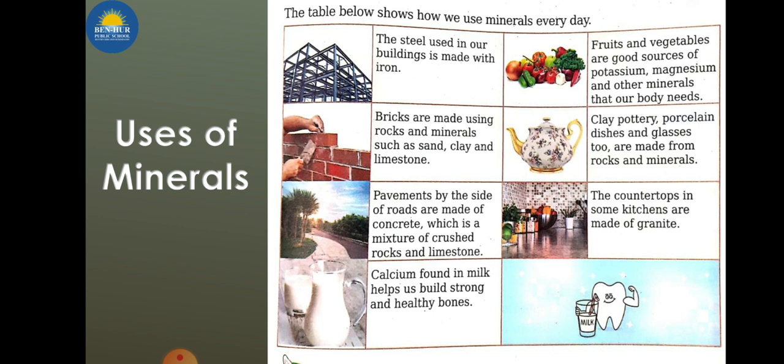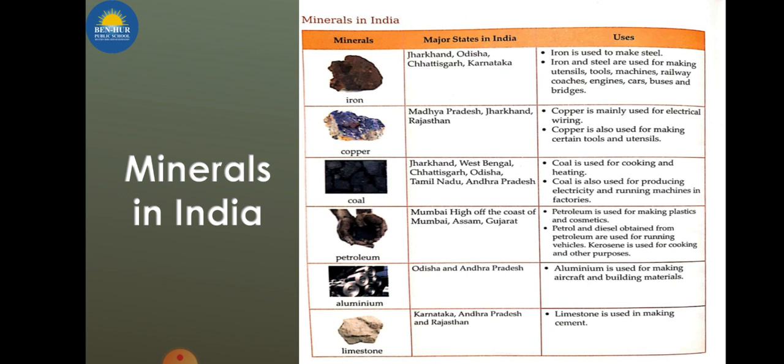Now, uses of minerals: steel is used in our buildings; bricks are made using rocks and minerals like sand, clay, aluminum, and stone. Quartz, limestone, and calcium are helpful in building our bones. Fruits and vegetables are a good source of potassium and magnesium. Clay pots and glasses are also made from rocks and minerals.